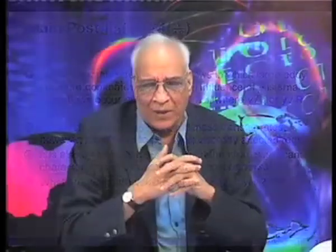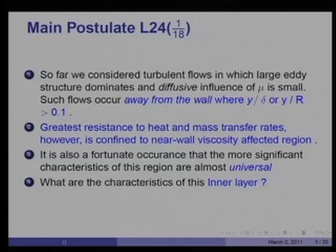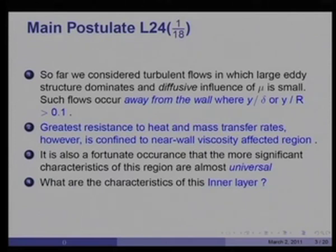What is the size of this inner layer? Approximately, y divided by delta in a boundary layer would be of the order of 15 percent, and likewise y divided by radius in a pipe flow would again be of the order of 15 percent. So we are talking about a fairly narrow region close to the wall — about 15 percent — whereas away from the wall, where the diffusive influence of viscosity is very small, y/delta would be greater than 0.15.